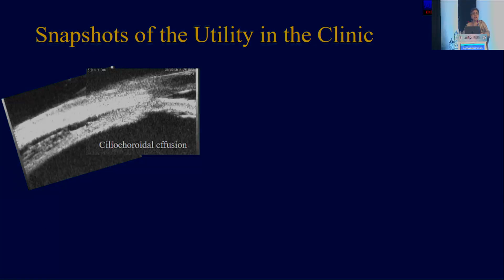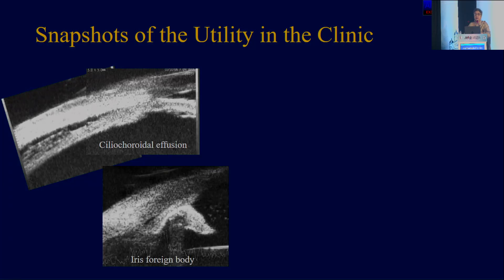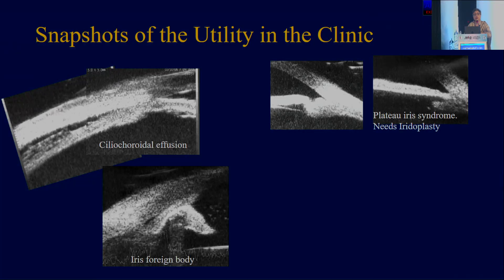This was a patient with unexplained hypotony following phacoemulsification, and the UBM showed us that there was actually a ciliocoroidal effusion. I don't think any other investigation could have penetrated the sclera to show us what was going on. There was also an intractable endophthalmitis which had undergone PPV but just wouldn't get better, until the UBM found a metal piece embedded behind the iris — you can see the backshadowing there. So if you have an occult intraocular foreign body in the anterior chamber, the UBM can detect that.